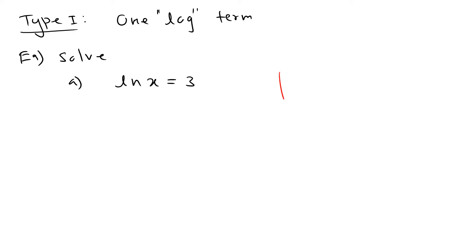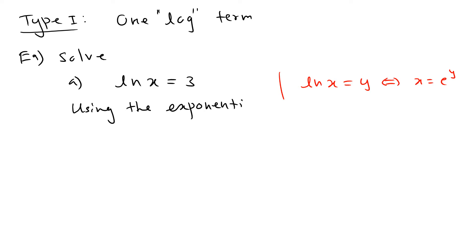Recall that ln x = y if and only if x = e^y. So ln means natural log, the base is e. Writing in exponential form, we get x = e^3. Using a calculator, this is roughly 20.09 rounded to two decimal places.